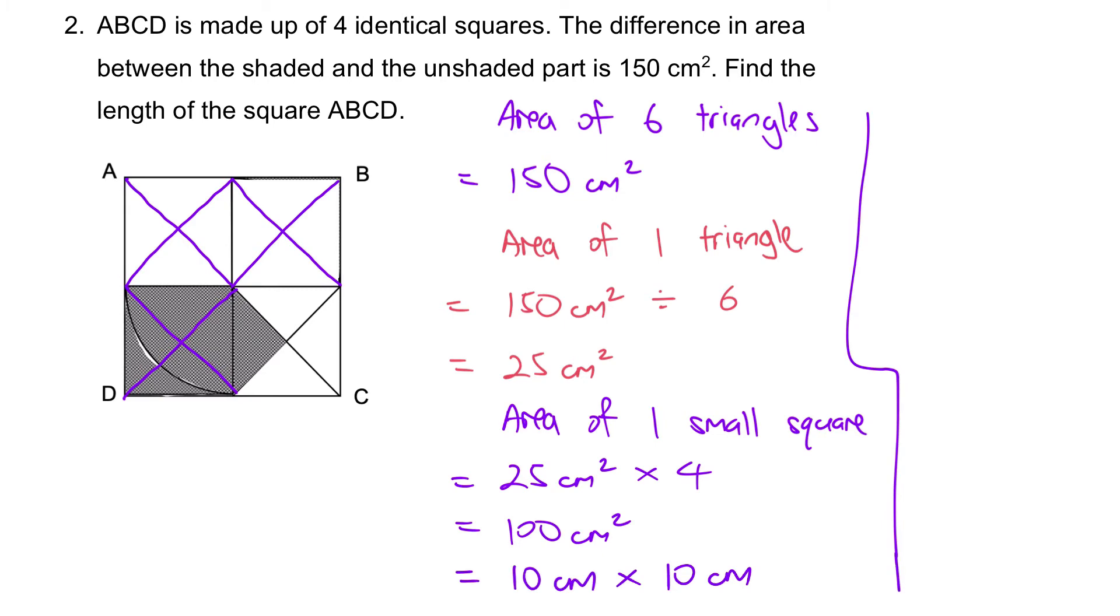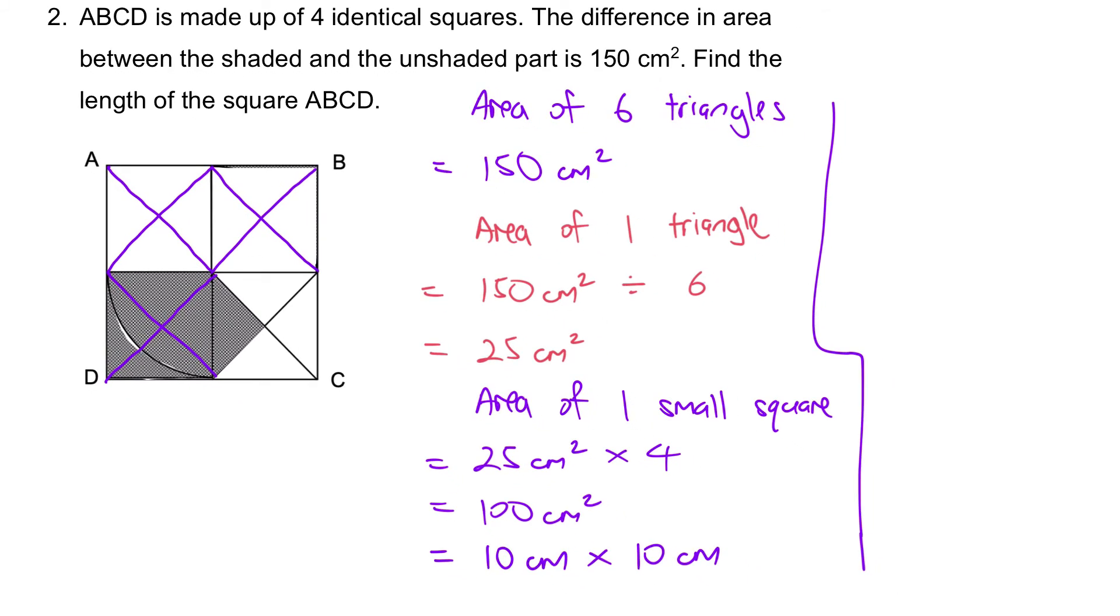Then next step will be the answer. Length of the square ABCD will be 10 cm times 2, which is 20 cm. Let's go on to the next question.